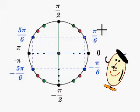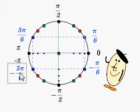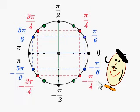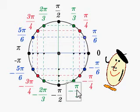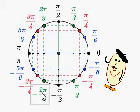The blue angles: pi over 6 and its opposite, 5 times pi over 6 and its opposite. The red angles: pi over 4, 3 times pi over 4, negative 3 times pi over 4, and negative pi over 4. And the green angles: pi over 3 and its opposite, negative pi over 3, 2 times pi over 3, and negative 2 times pi over 3.